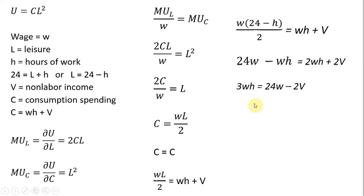And moving this 2V over here. And now dividing by 3W. 24W divided by 3W is 8, and 2V divided by 3W gives us this. And that is our labor supply equation.